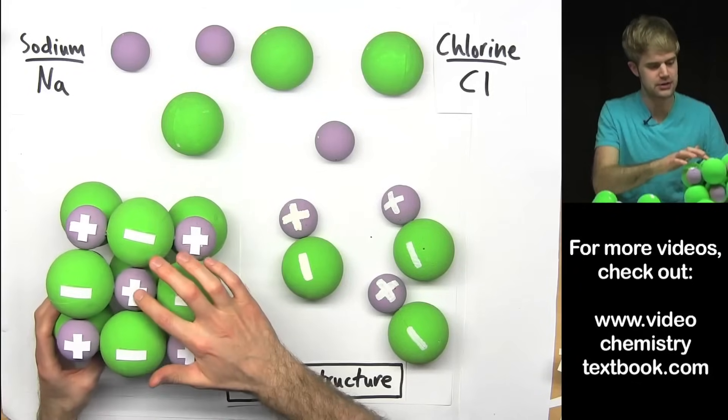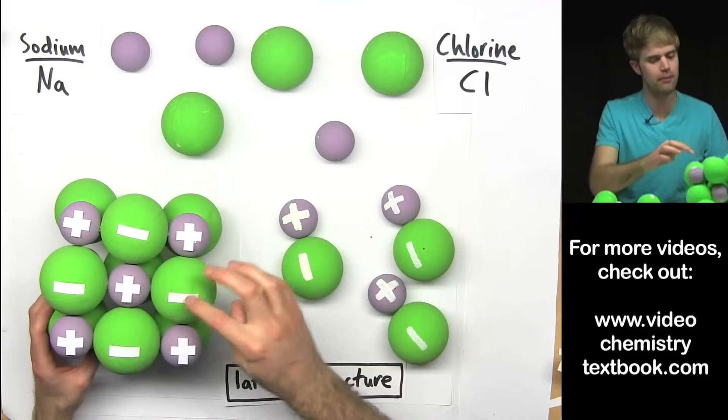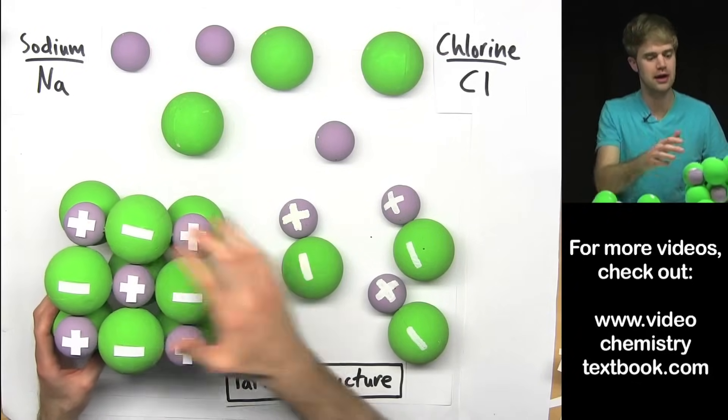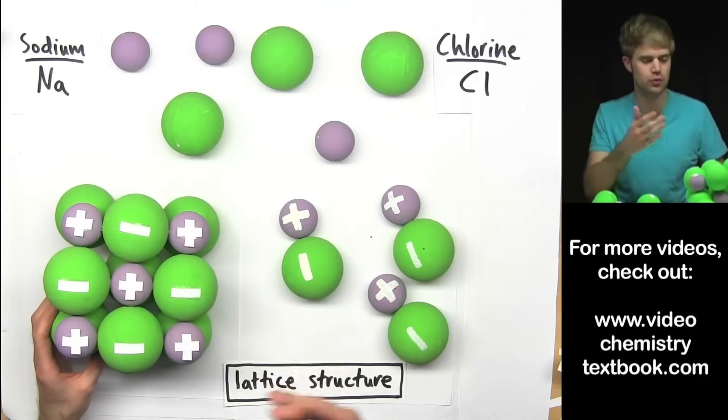And over here, we've got a positive ion that's surrounded by a whole bunch of negatively charged ions. And just in general, through the lattice structure, we alternate.